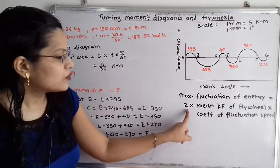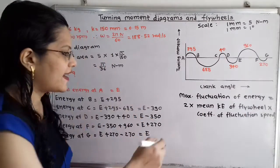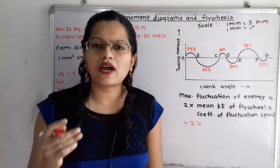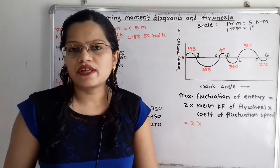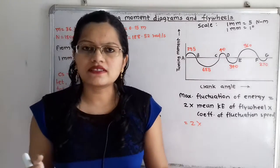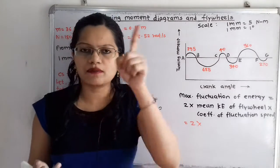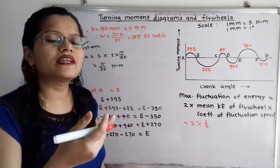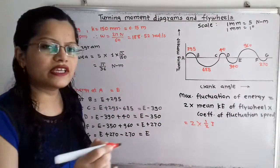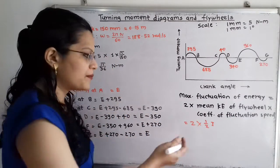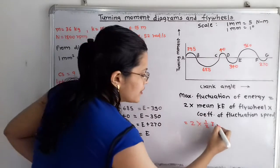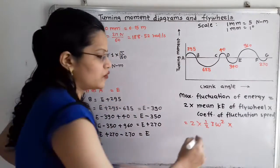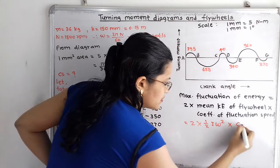On the right-hand side, we have 2 times the mean kinetic energy of the flywheel. For linear motion, kinetic energy is half mv². Converting to rotational motion — because the flywheel is rotating — we use half times I times omega², where I is the mass moment of inertia and omega is the mean angular velocity. The 2s cancel, giving us I times omega² multiplied by Cs, the coefficient of fluctuation of speed.